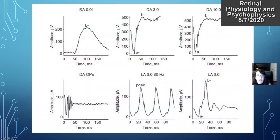A dark adapted very low intensity flash is not typically used too often because the A wave is so small. For rod function we typically look at a dark adapted state at higher flash light intensities, where the A wave is much more prominent with a nice B wave. The A wave is more indicative of photoreceptor function, and the B wave is more of the inner retinal or bipolar cell function.